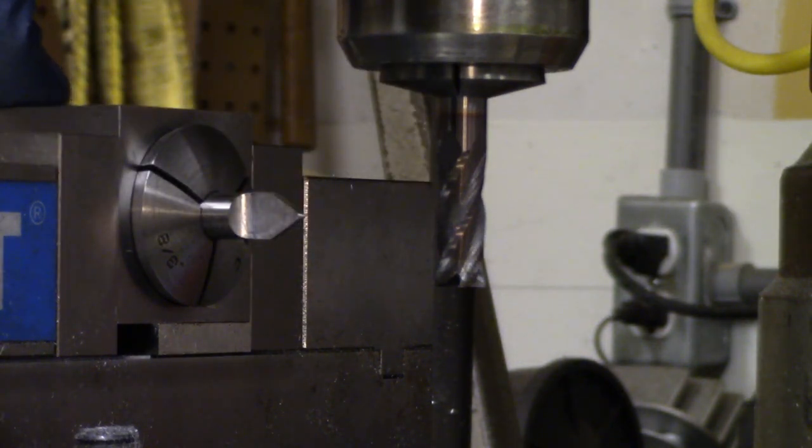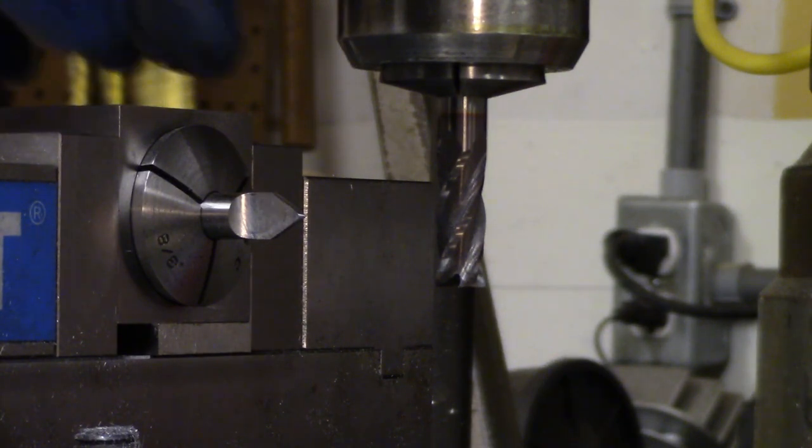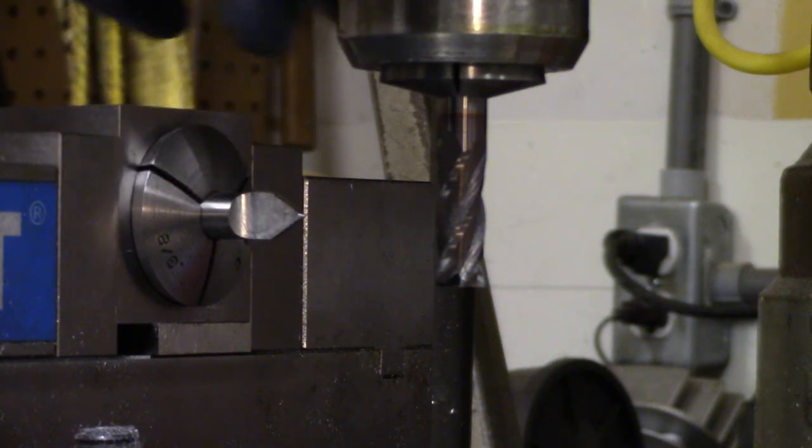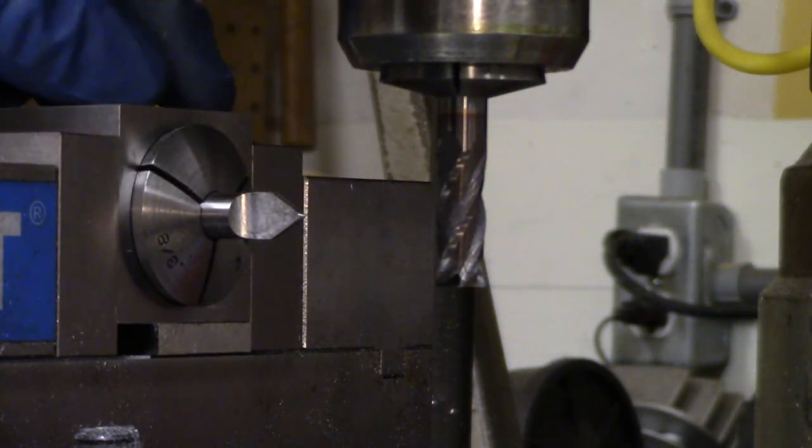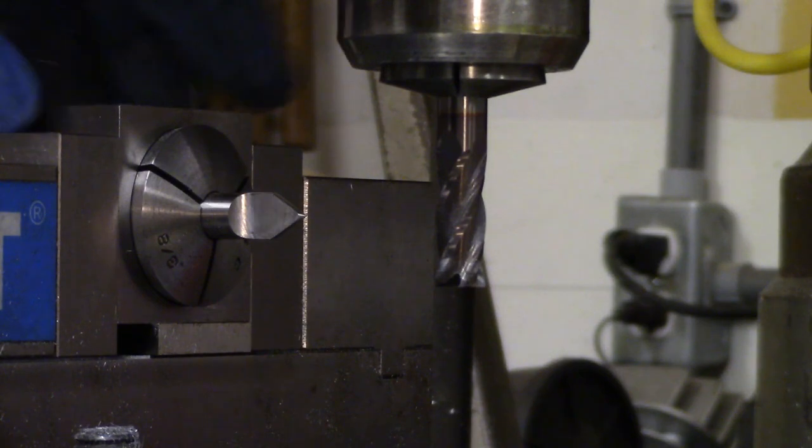I'm also holding this in a collet block, not because I need to do any indexing, but just because that was a much more secure way of holding this. I've got it held almost all the way around the part except for the slits, as opposed to two tiny points of contact just holding it in the vise. I could certainly have done that, but I might have dented up the part as well.